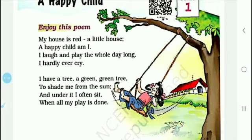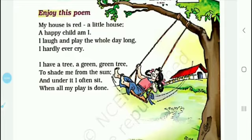Now we come to the next lines: 'I have a tree, a green green tree' — as you can see here, there is a green tree. 'To save me from the sun' — mujhe suraj ki dhoop se bachata hai. The child says: I have a green tree which saves me from the sun.